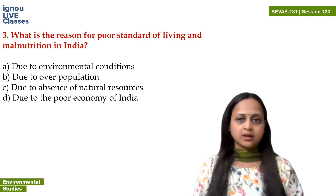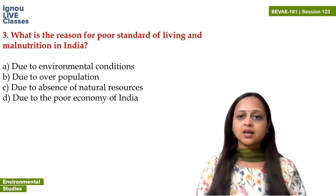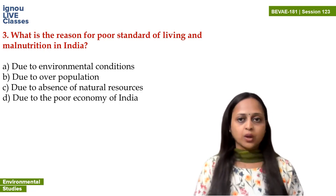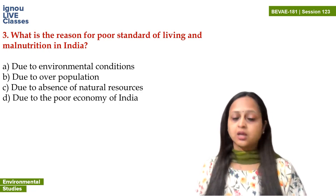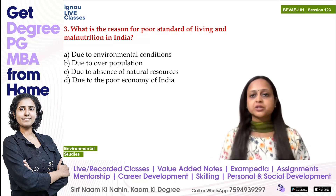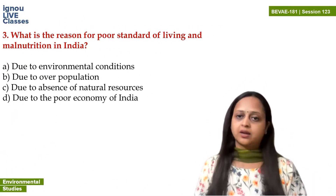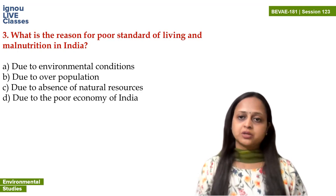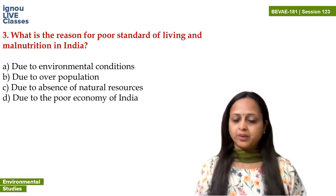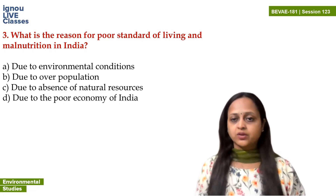Due to our overpopulation, the environment is getting imbalanced. If our population is increasing, natural resources are diminishing. If our population is increasing, our economy is gradually becoming poor, and because of that, people's standard of living is poor, and their diet is affected — because to fulfill the food demands of such a large population, we are compromising by using pesticides and fertilizers in agricultural crops.